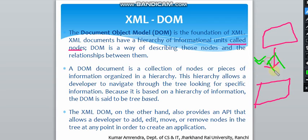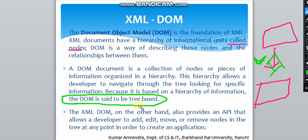A DOM document is a collection of nodes or pieces of information organized in a hierarchy. This hierarchy allows a developer to navigate through the tree looking for specific information. Whenever a developer wants to get some information from the hierarchical tree, it starts with the DOM — the Document Object Model — and goes from one node to another. This traversal is always dependent upon the needs and the hierarchy of the tree. Because it is based on a hierarchy of information, the DOM is said to be tree-based.